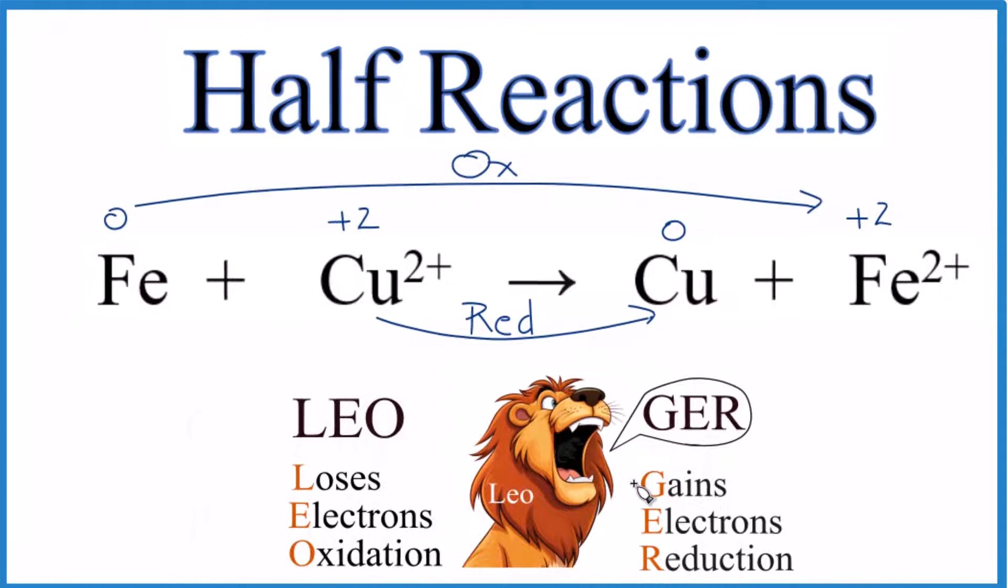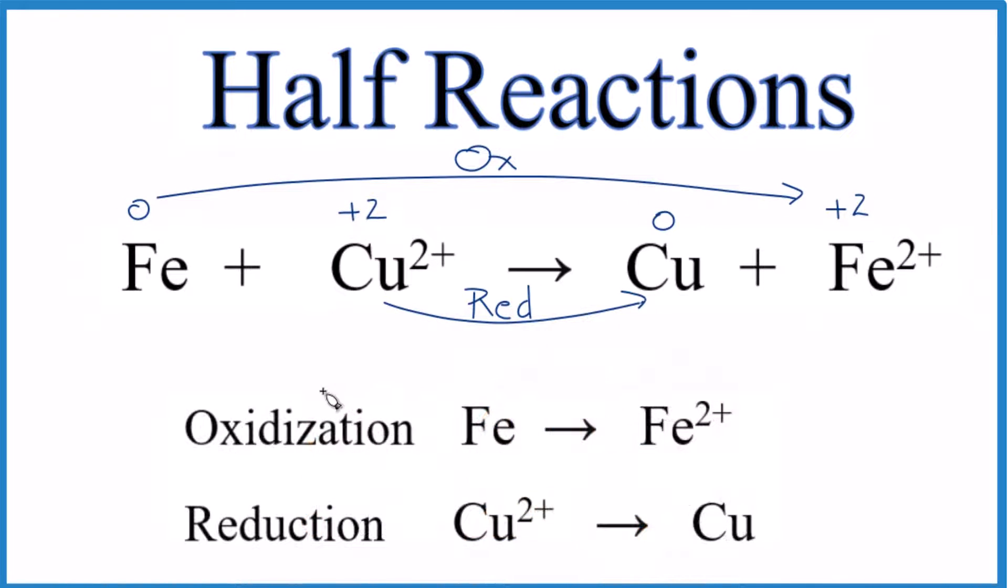Now we can write the half reactions. We have our oxidation half reaction and our reduction half reaction. These both make up the full reaction. We've just separated them for convenience. And we could see iron, that was oxidized, so it lost electrons, two of them.